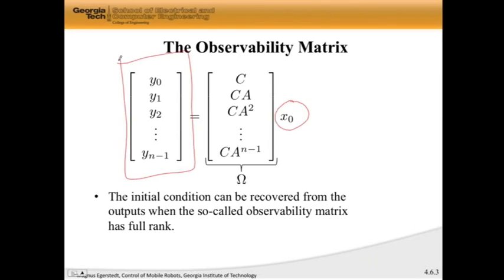Where we want to be able to basically invert omega to recover x naught from this stack of outputs. And just as in the controllability case, this is possible when this omega, the observability matrix, has full rank. Meaning that the number of linearly independent rows, or columns, it's the same, is equal to little n.